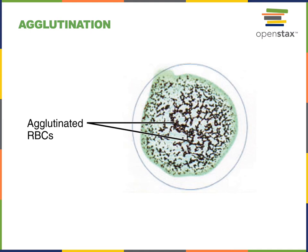One of the ways that antibodies will attack erythrocytes is they bind to the surface antigens on erythrocytes and stimulate clumping of the erythrocytes, which is known as agglutination. As these clumps of erythrocytes form in the blood, they can start to block small blood vessels and disrupt blood flow in the organ, leading to organ failure.